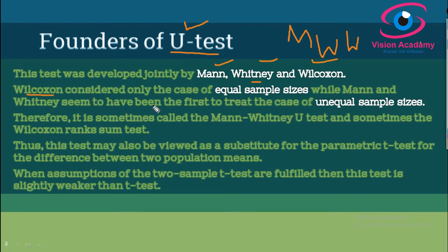Wilcoxon considered only the case of equal sample sizes, while Mann and Whitney were the first to treat the case of unequal sample sizes. For example, if one population sample has 8 observations and another has 10, that is a case of unequal sample sizes, which Mann and Whitney addressed.